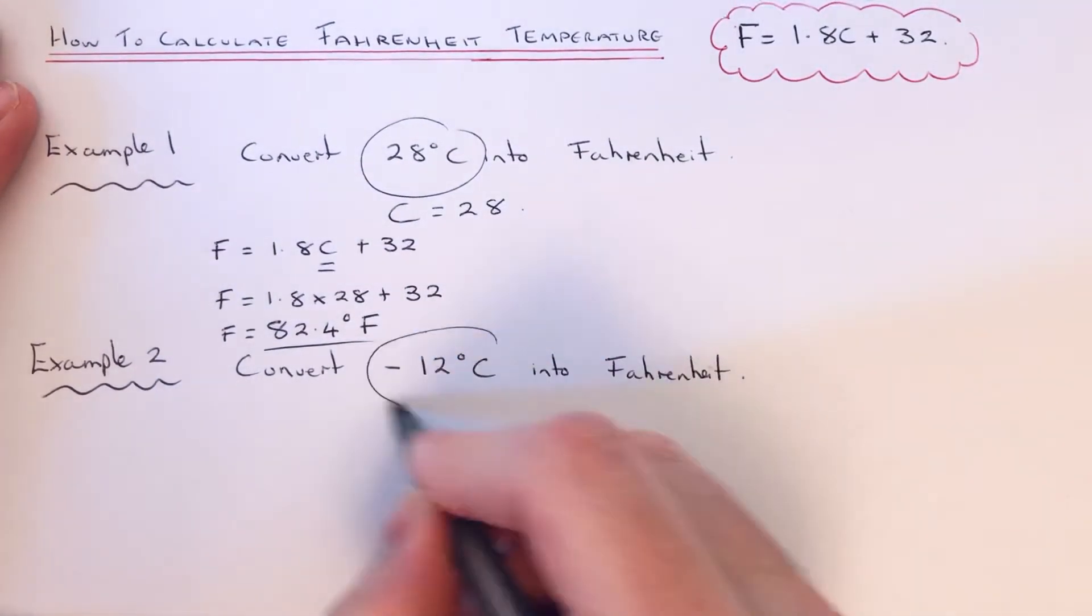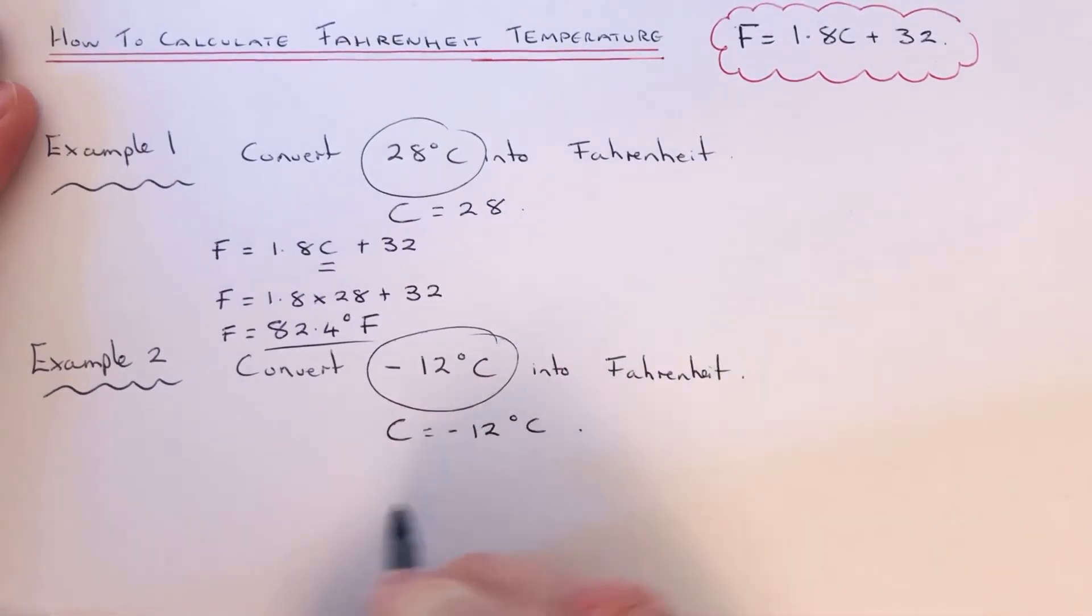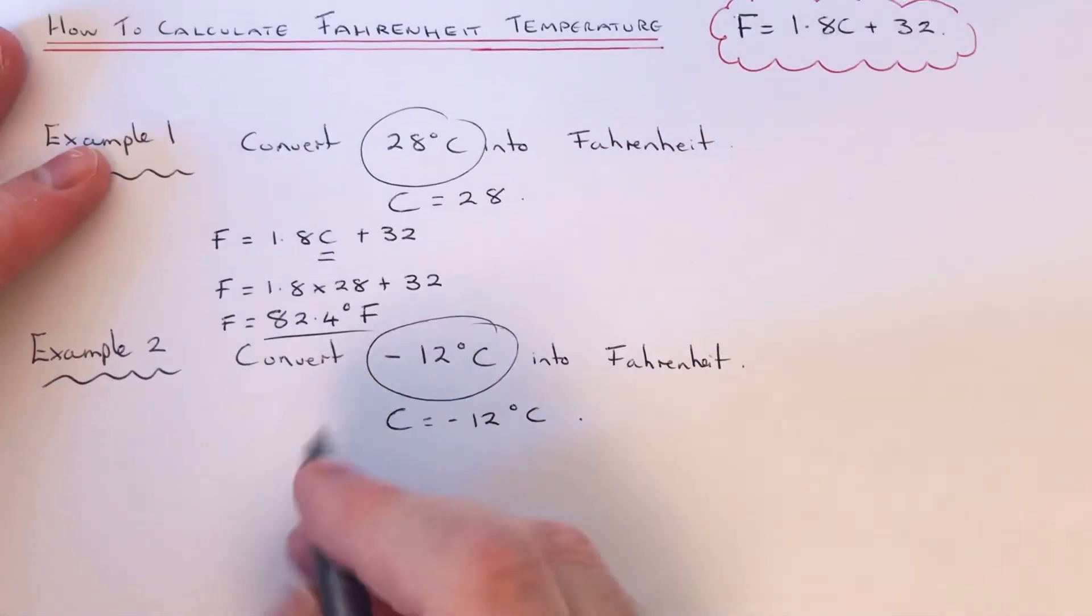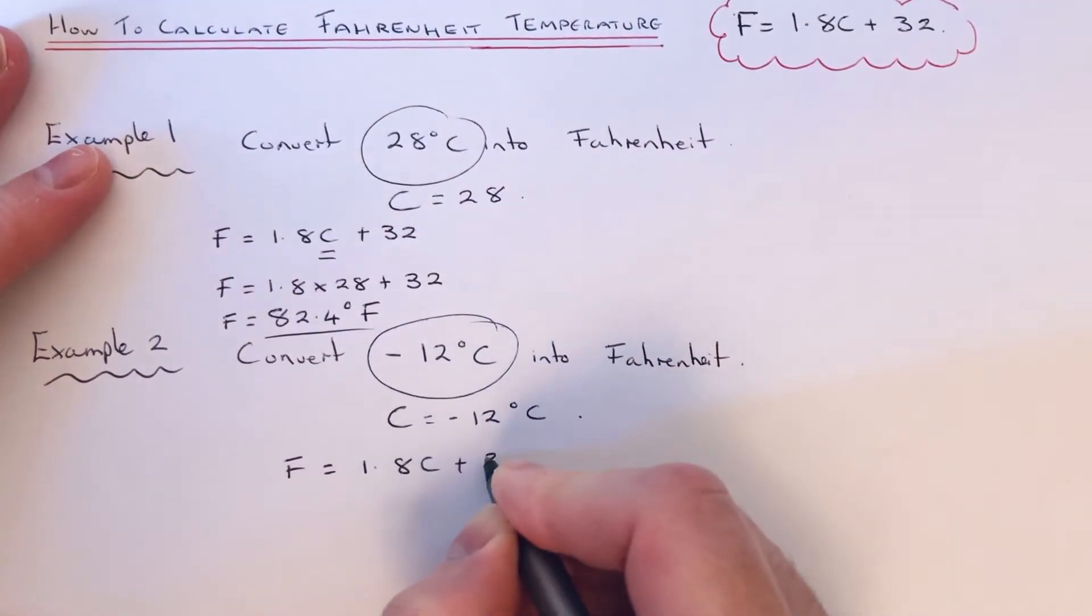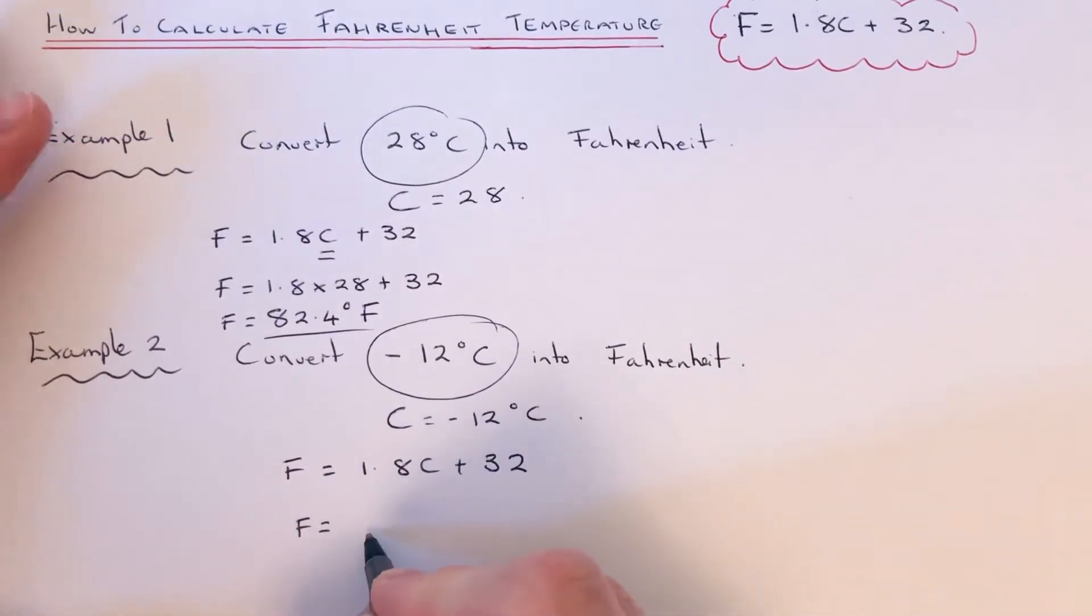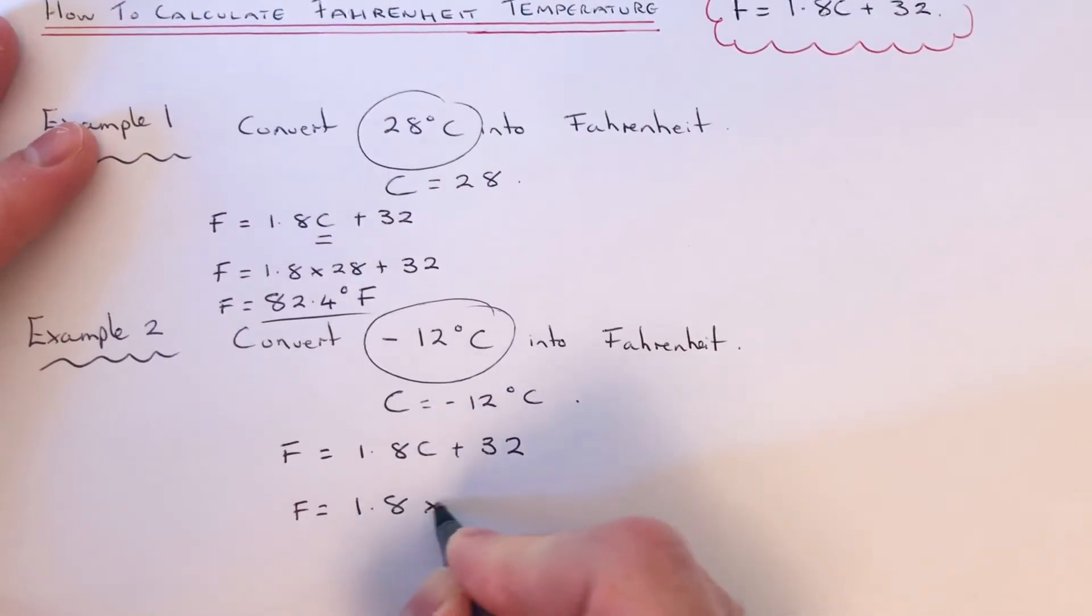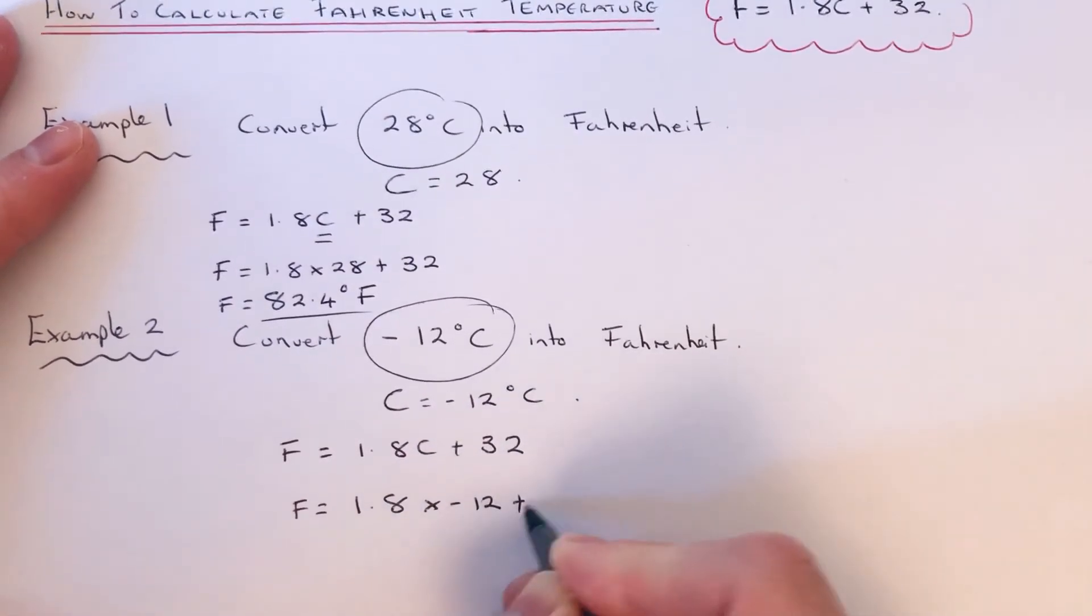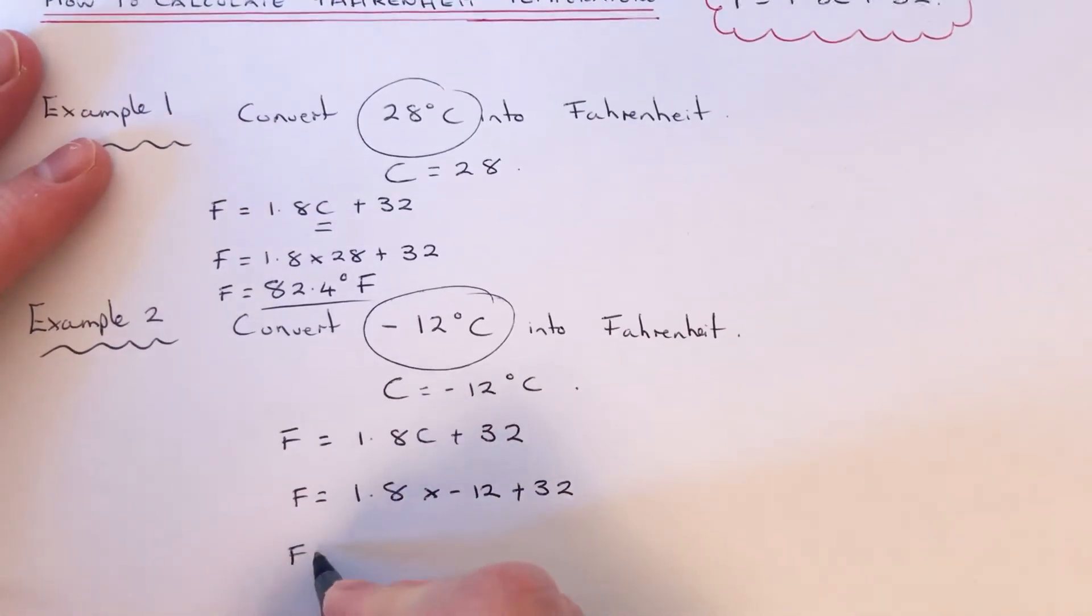This time C is equal to minus 12 degrees Celsius. Let's copy our formula out. If we substitute minus 12 into the formula, it will be 1.8 times minus 12 add 32. Again, you should be able to type this in one go on your calculator.